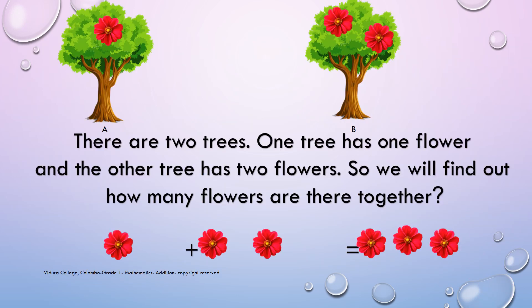I have another example for you. There are 2 trees. One tree has 1 flower and the other tree has 2 flowers. So we will find out how many flowers there are together. 1, 2, 3. There are 3 flowers.